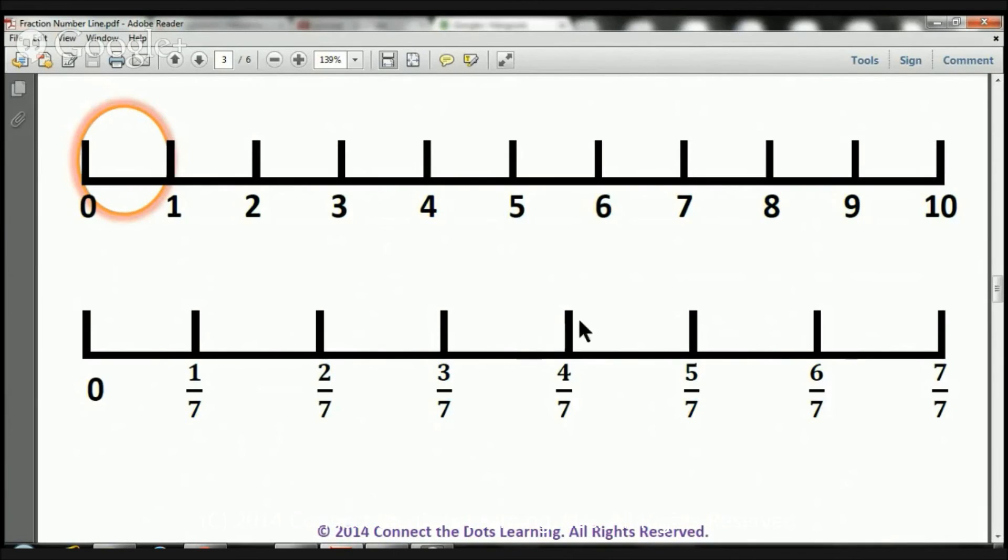1, 2, 3, 4 pieces. From 0 to here, we've got 5 7ths, 1, 2, 3, 4 pieces.